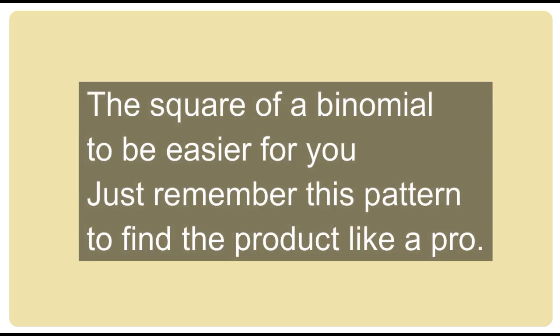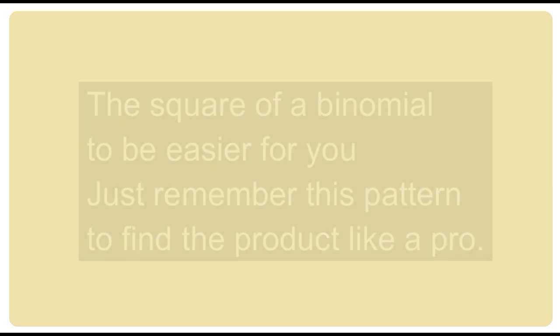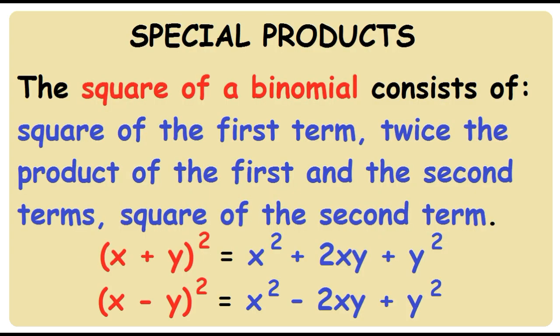The square of a binomial — to be easier for you, just remember this pattern, find the product like a pro. The square of a binomial consists of: square of the first term, twice the product of the first and the second terms, square of the second term.